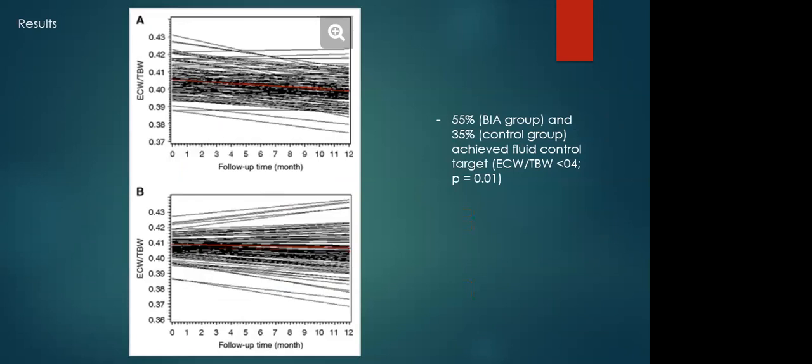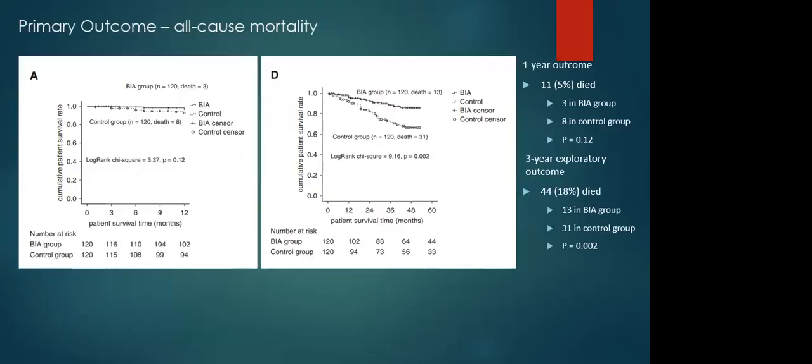After one year, 55% in the BIA group and 35% in the control group achieved the fluid control target of ECW to TBW ratio less than 0.4. This data is important because it showed that the study intervention achieved a good separation from the control arm. This means that whether the null hypothesis is rejected or not, the results are meaningful. Now let's look at the primary outcome, which is all-cause mortality. The overall patient survival after one year was not statistically different between BIA-guided management group and the control group.